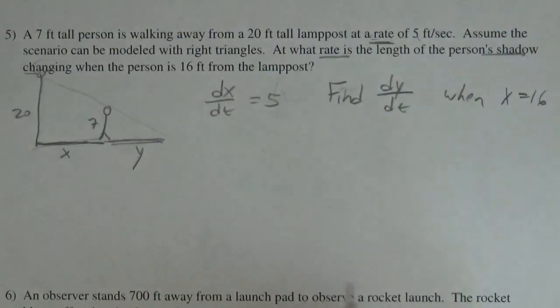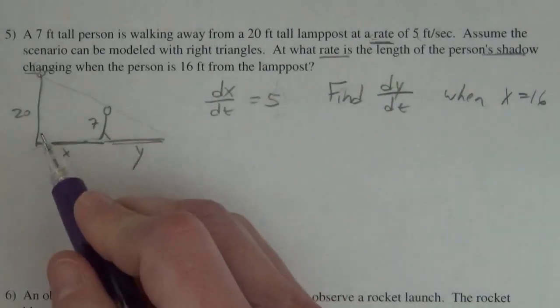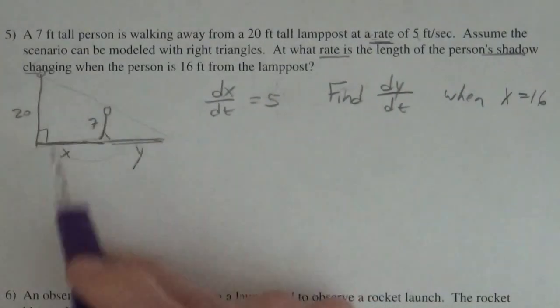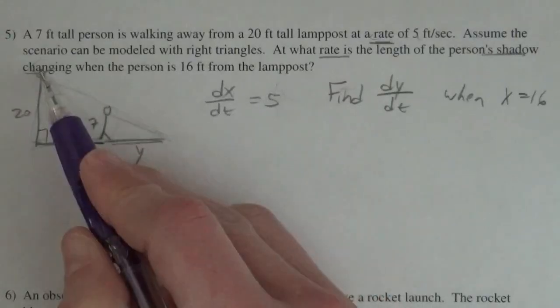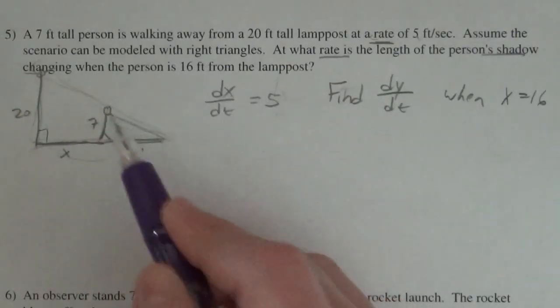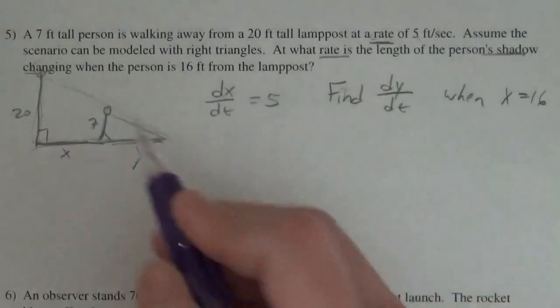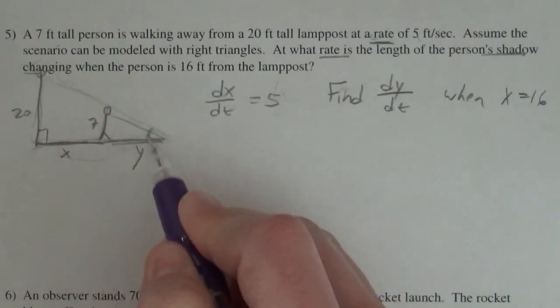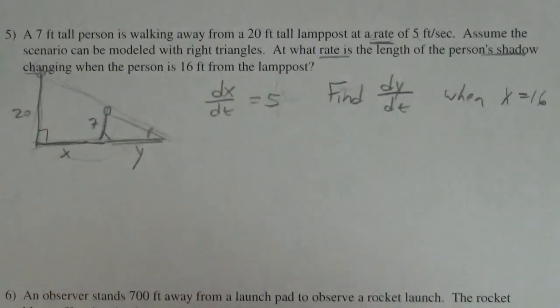So now that we've got it translated into math we need an equation to relate all these variables. What we have are these similar triangles here. This big triangle and this little triangle are similar because the guy's standing straight up and they share the same angle, so angle-angle similarity.